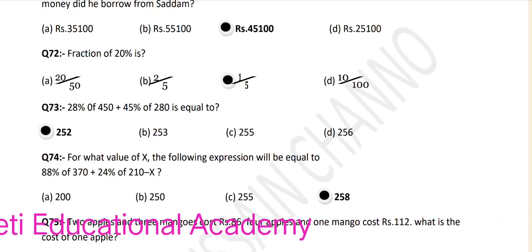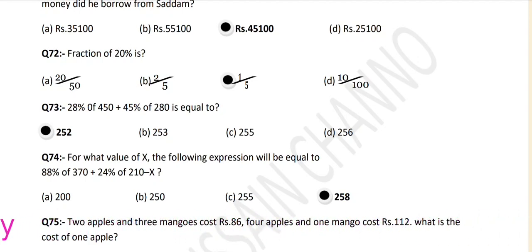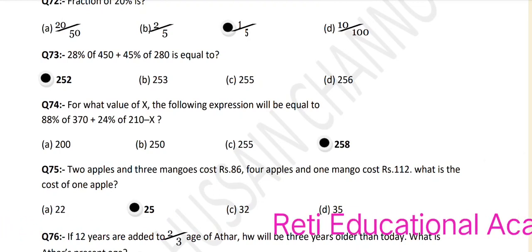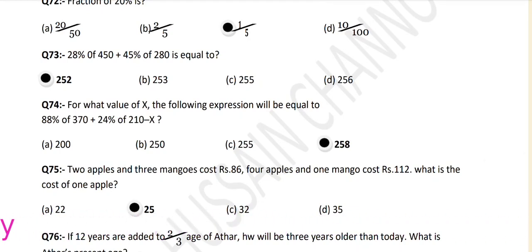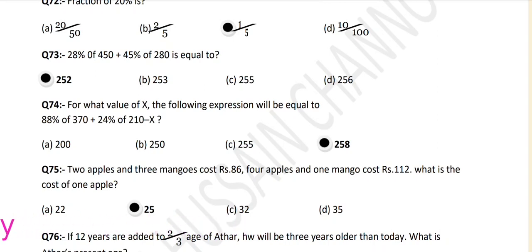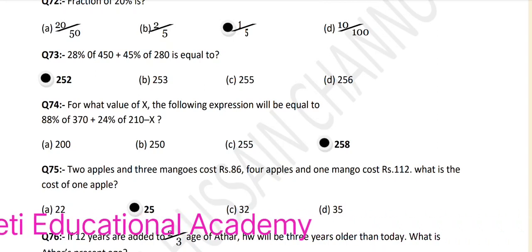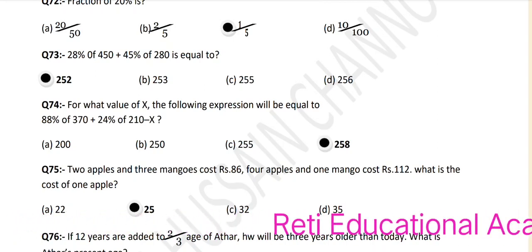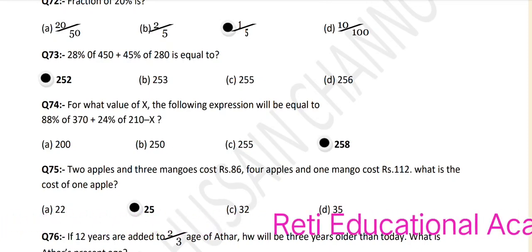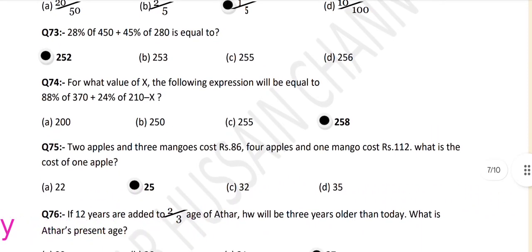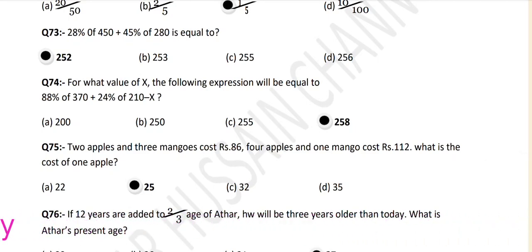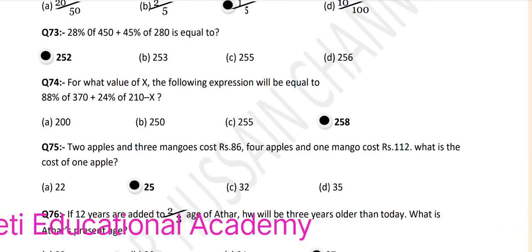Question number 74: For what value of x will the following expression be equal to 88 percent of 370 plus 24 percent of 210 minus x? The correct answer is D. Question number 75: Two apples and 3 mangoes cost rupees 86. Four apples and 1 mango cost rupees 112. What is the cost of 1 apple?